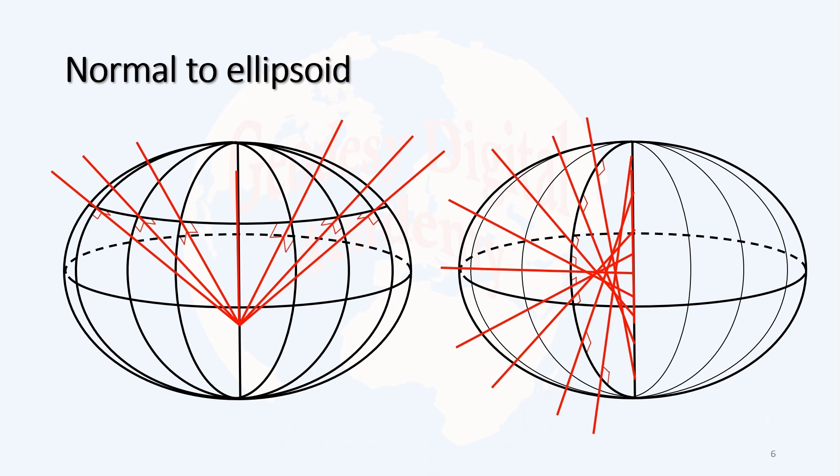Also, if we plot all normals at all points on the meridian, then they will collide with the rotation axis of the ellipsoid, which contains the semi-minor axis, but not at the center.